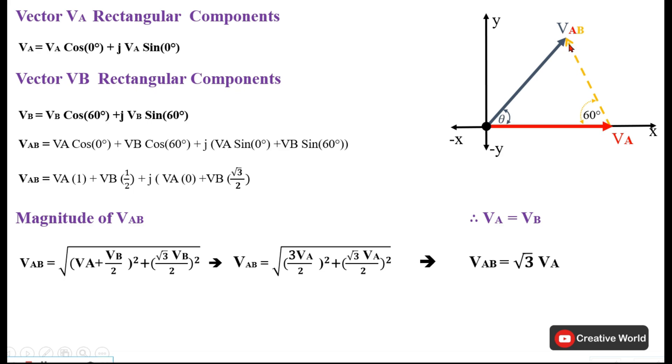In order to find out the rectangular components of vector VB, we are taking this angle 60 degrees. Its horizontal component will be VB cos 60 degrees and its vertical component will be VB sin 60 degrees. We have found out the rectangular components of VA and VB. We will add the rectangular components of both vectors to form the rectangular components of VAB vector.